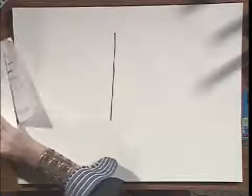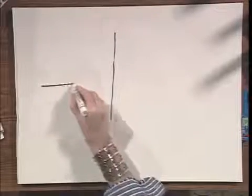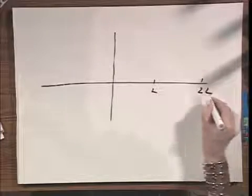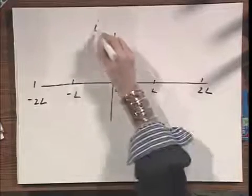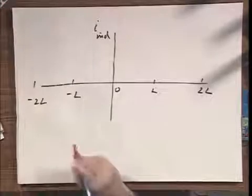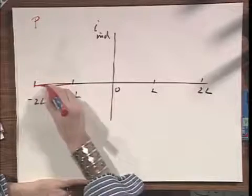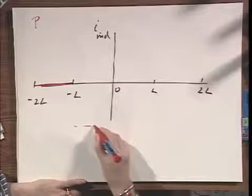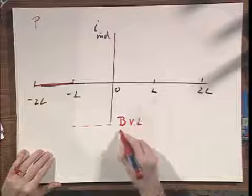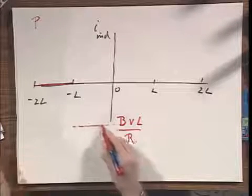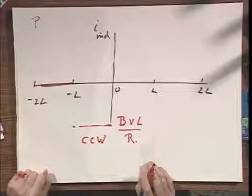of the induced current as a function of this linear dimension: L, 2L, 0, minus L, minus 2L. And if I draw here I induced, then we would agree that when point P, this is all relative to point P, when P is outside capital L, there is no induced current. Instantaneously, when P penetrates a magnetic field, it goes to a value BVL divided by R, and I call this negative, but it's really a counterclockwise current, and I would like to call a clockwise current positive.